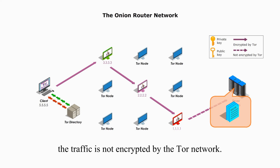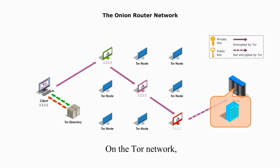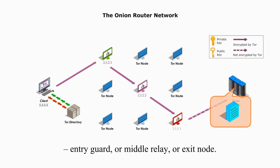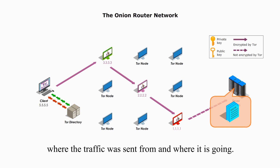On the Tor network, any given node or router only knows a partial path, but no one knows the entire path, and no one knows its role — either Entry Guard, Middle Relay, or Exit node. This prevents anyone from knowing where the traffic was sent from and where it is going.